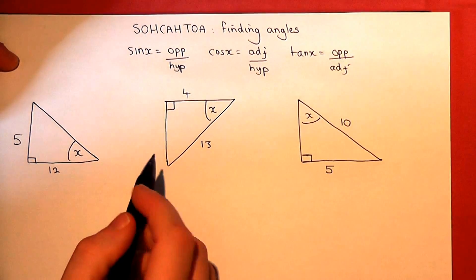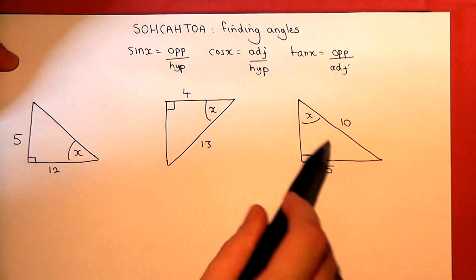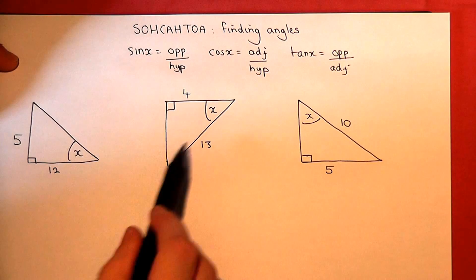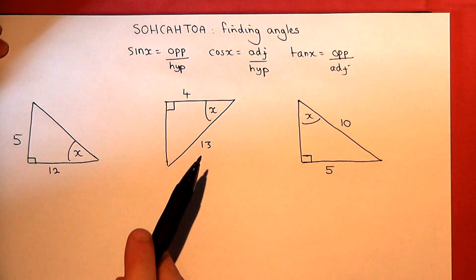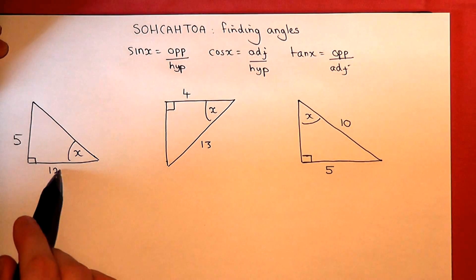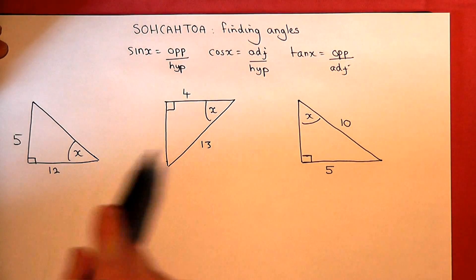This video talks through how to find missing angles when you know two sides. Now then, the first step is to label the sides either opposite, adjacent, or hypotenuse.